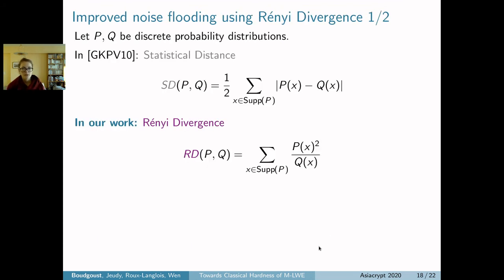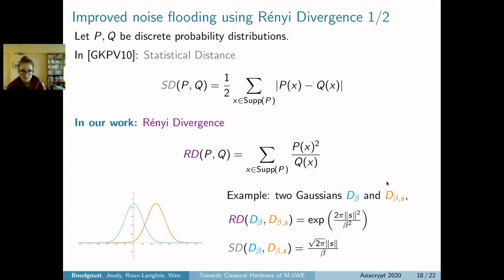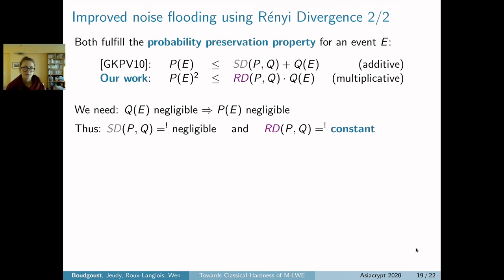Let's focus on the noise flooding. In the original paper from GKPV, they use the statistical distance to measure how far away two probability distributions are. In our work, we take an alternative measure, which is the Rényi divergence. I gave you the definitions of those probability measures, but it's just important that they are two different ways of calculating how far two probability distributions are from each other, a bit like taking two different norms in Euclidean space. If you take, for example, two Gaussians 𝒟_β and one shifted by vector S, the Rényi divergence is given by this value and statistical distance by this value.